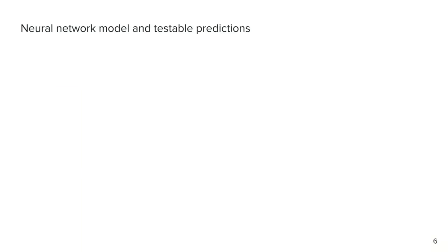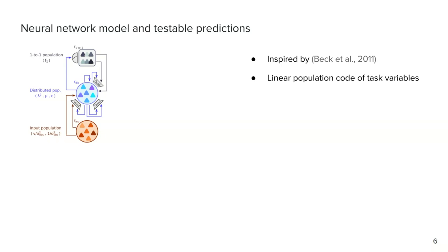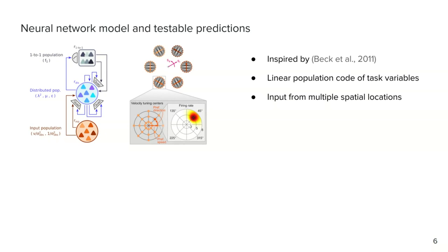It turns out that the computations required by the algorithm are compatible with neural dynamics. We devised a recurrent neural network model generalizing ideas of Jeff Beck's 2011 paper on neural Kalman filtering. In the network, task-relevant variables are represented by a linear population code. The network integrates input from multiple spatial locations, with the local tuning of input neurons modeled at the cortical area MT. For this network model, we can derive testable predictions for neuroscience experiments to probe the neural representations of latent structure.